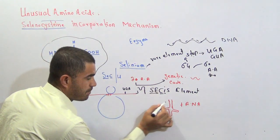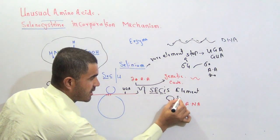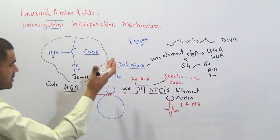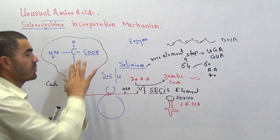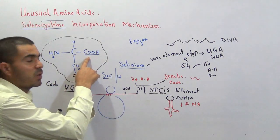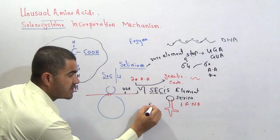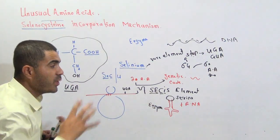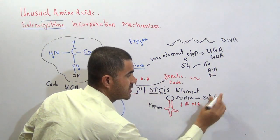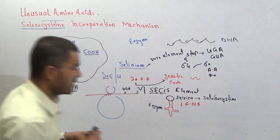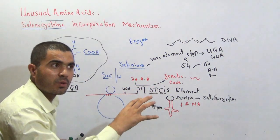Now, the transfer RNA that is here — on the transfer RNA there is an amino acid called serine. What is serine? Serine has only an OH group in the R position. So this structure represents three amino acids: when there is sulfur it is cysteine; when there is selenium it is selenocysteine; when there is OH it is serine. There are some enzymes which convert that serine into selenocysteine — meaning enzymes that add the selenium atom into the serine. So the serine amino acid on the transfer RNA will become selenocysteine.